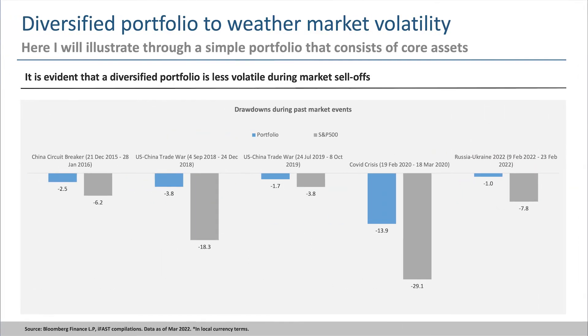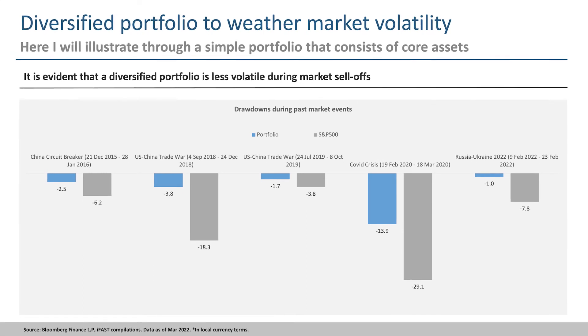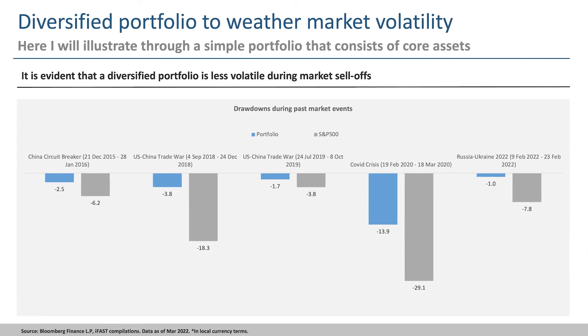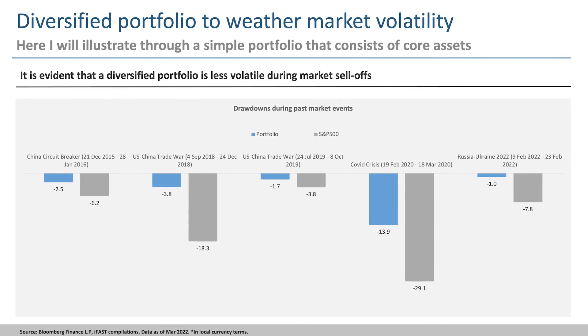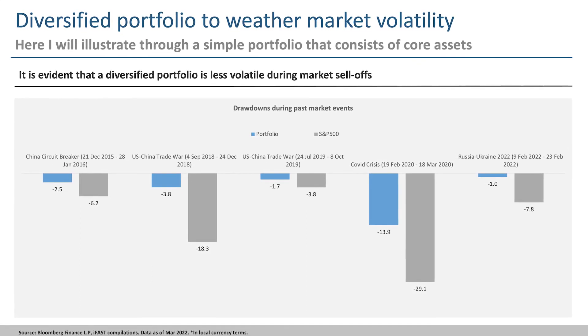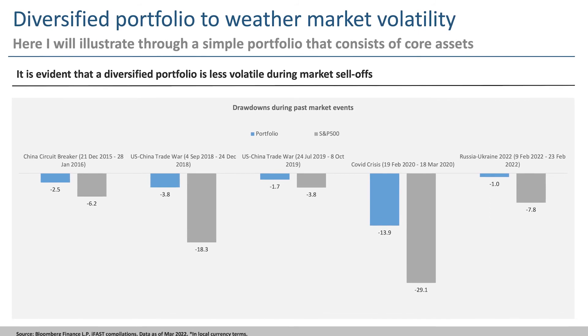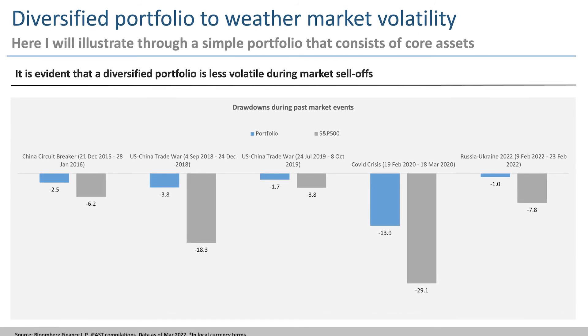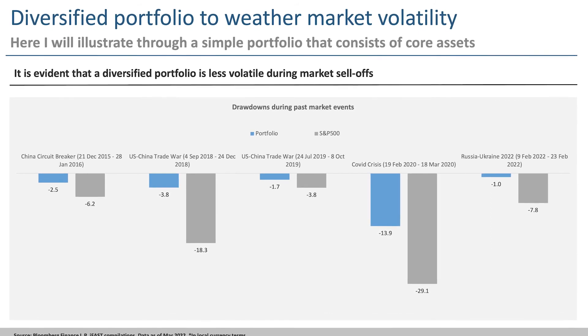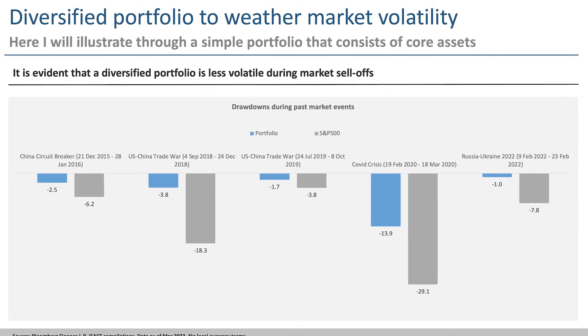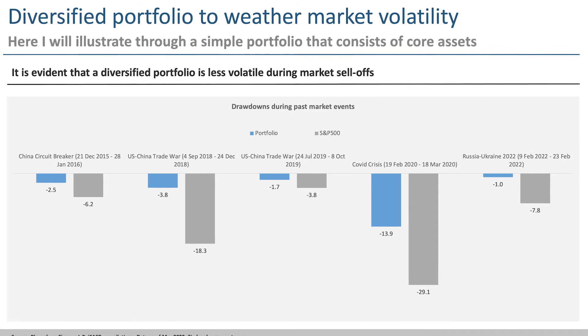It is evident that a diversified portfolio can weather through the market volatility better than a 100% US equity portfolio, as seen in the chart here where the drawdown is much lower. That's all for strategy number two: invest in a diversified portfolio.